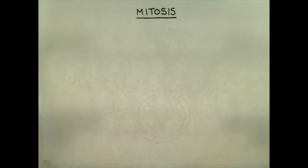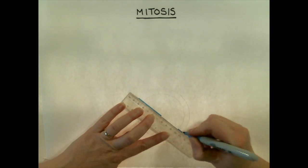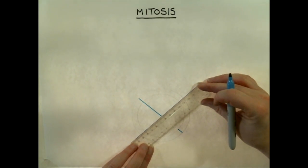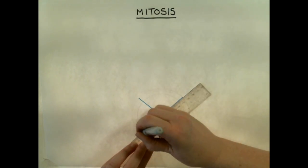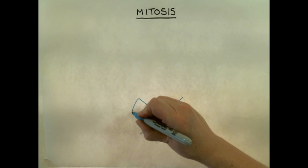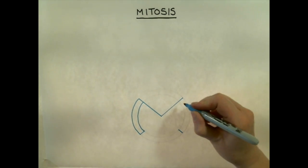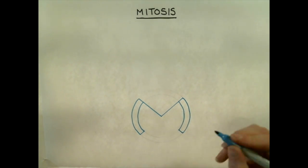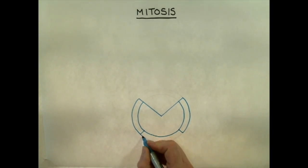The process of cell division in a somatic cell is called mitosis, and it results in the production of two genetically identical cells. A different process is used to produce germ cells — sperm and eggs — where the resulting daughter cells are genetically different from their parent cell. This is called meiosis, and will be the subject of another screencast.